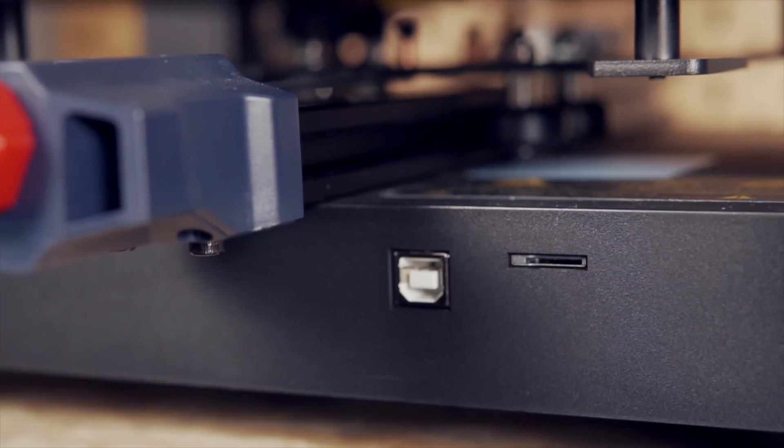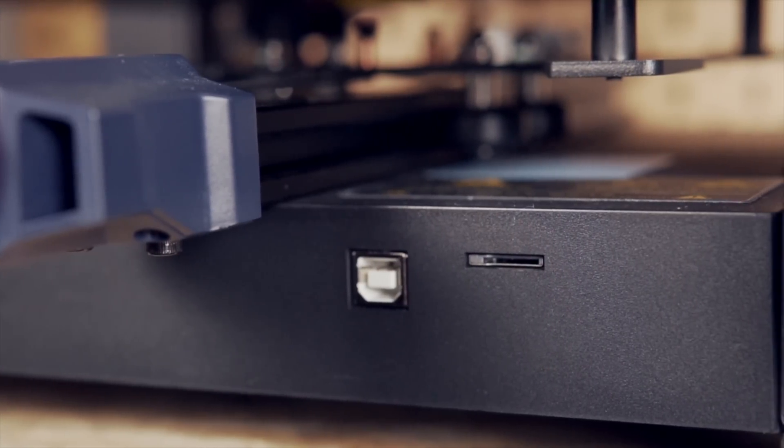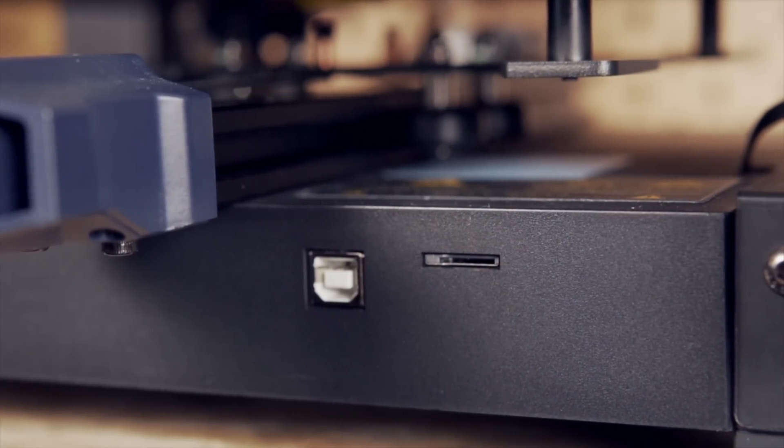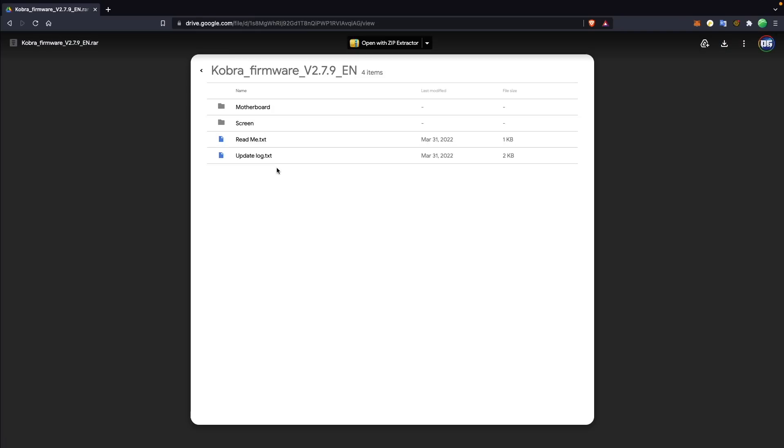You have the choice of printing directly over micro SD card using the screen, or you could hook the printer up over USB. As far as firmware goes, I believe the Cobra is running a version of Marlin, but through my initial search, I was only able to find a compiled bin file.